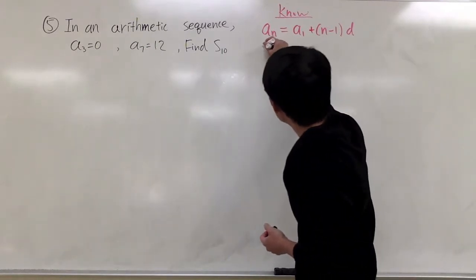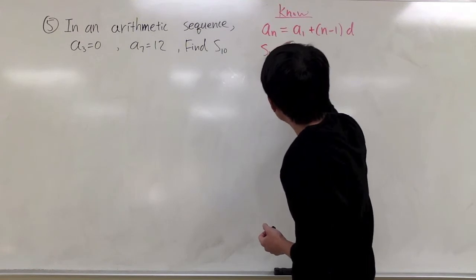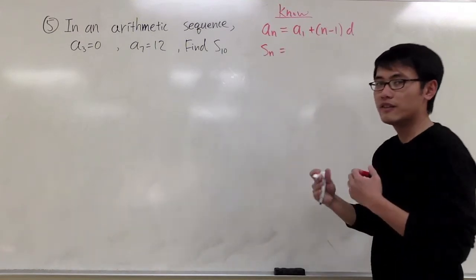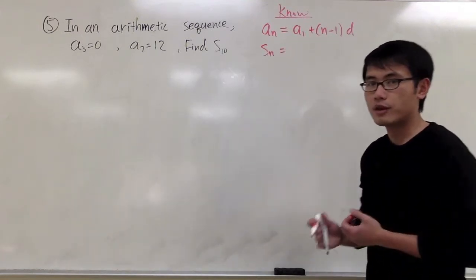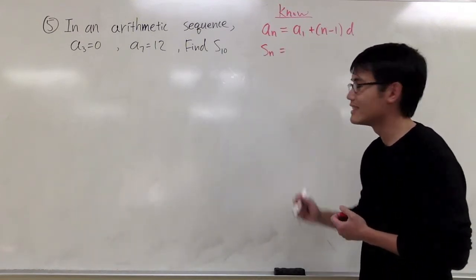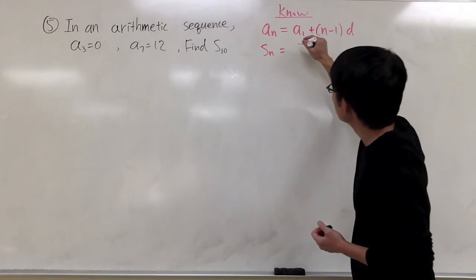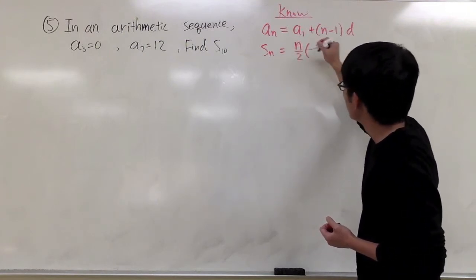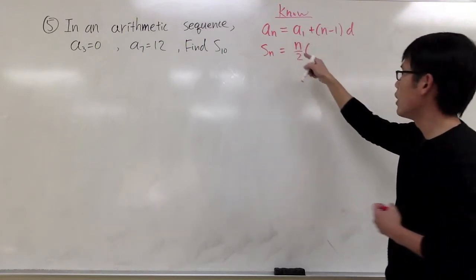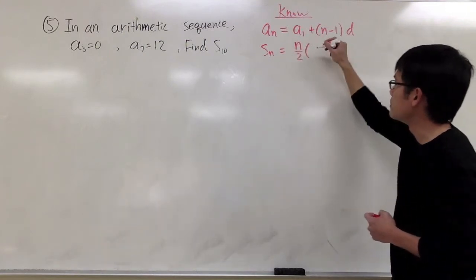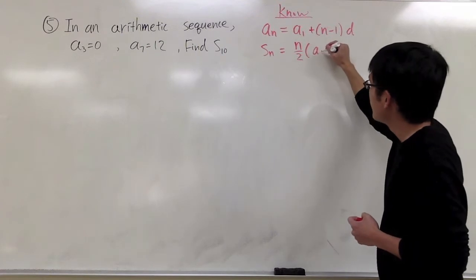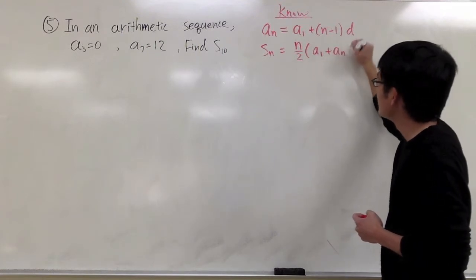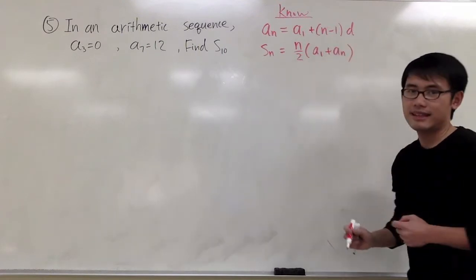We also need to know the Sn formula, which will give us the sum of the first n terms. And that is n over 2 times (a1 plus an).